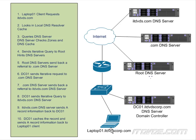We talked about iterative queries where our DNS server queries another DNS server, gets a referral, queries another, gets another referral or the answer — that's iterative. There's also something called a recursive query. A recursive query is sent to another DNS server, and then that other DNS server does all the work — it performs all the iterative queries to get the answer and sends it back. In our case, the recursive query comes from Laptop01 to DC01: DC01 does all the work and sends back the answer. A DNS server could also send a recursive query to another DNS server, making that server do all the work.